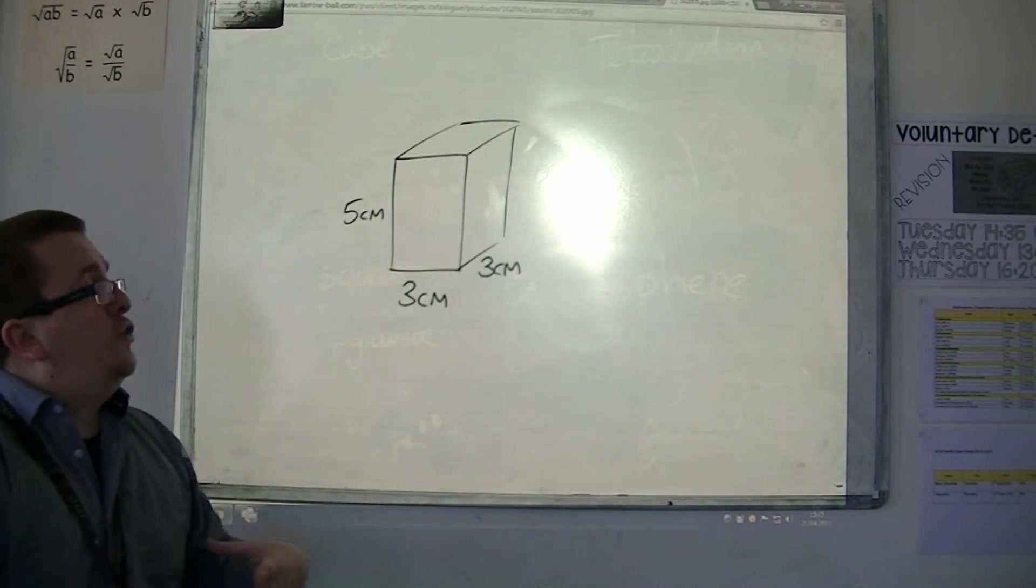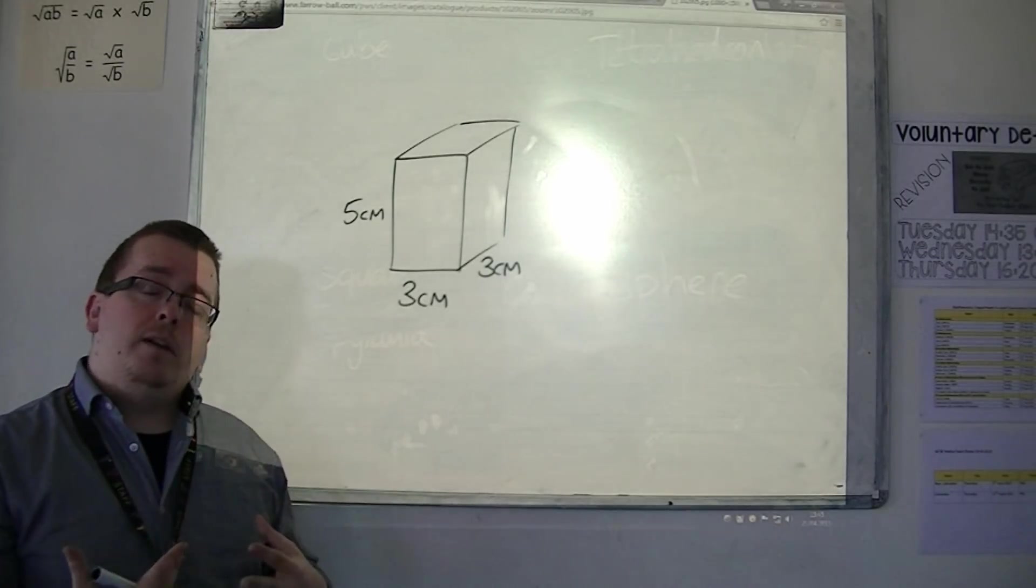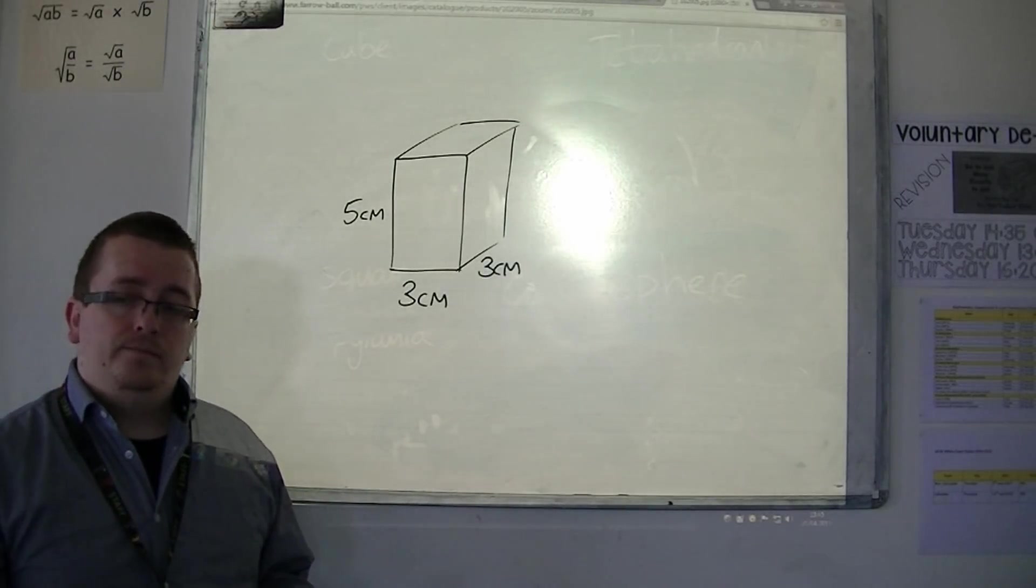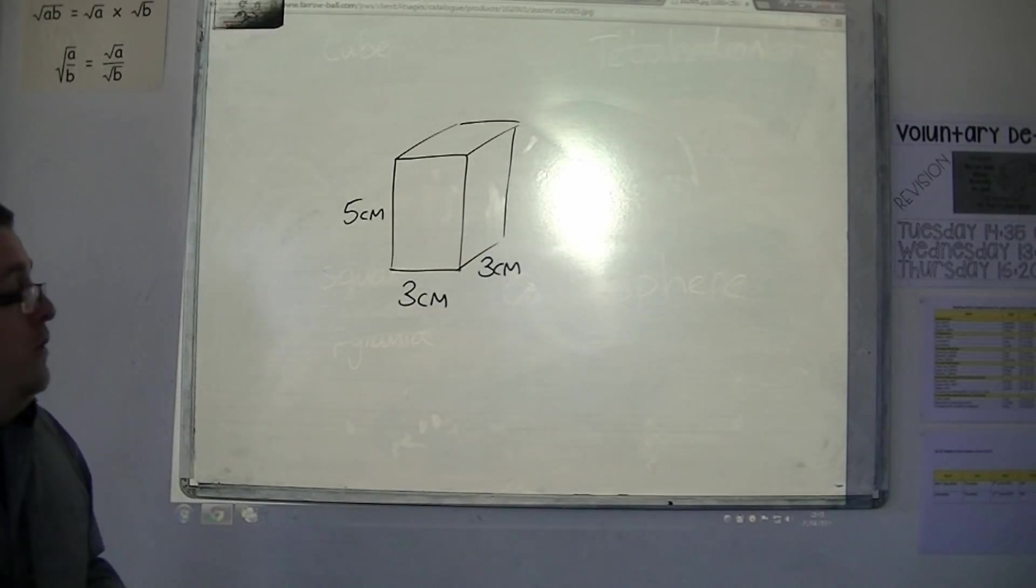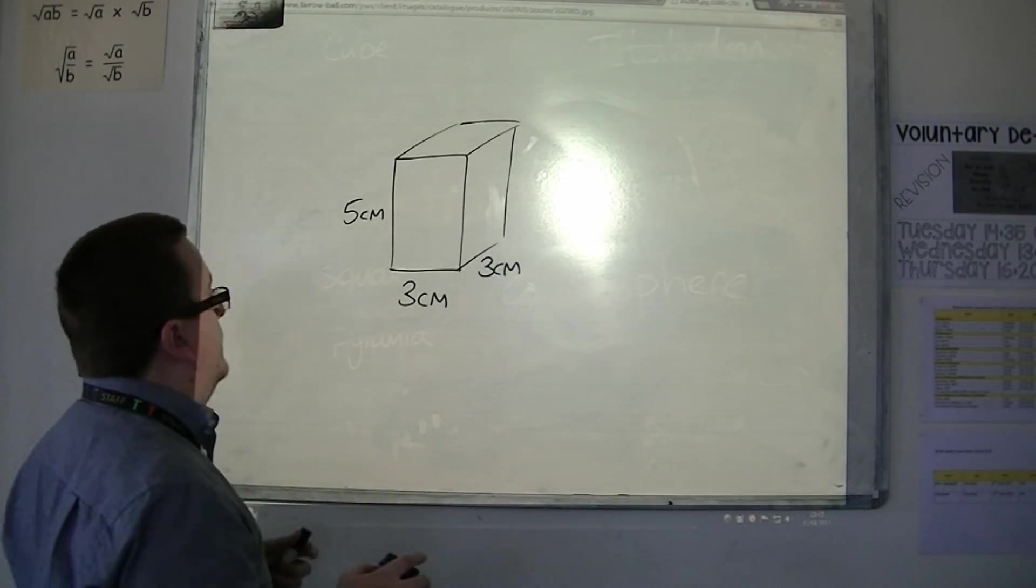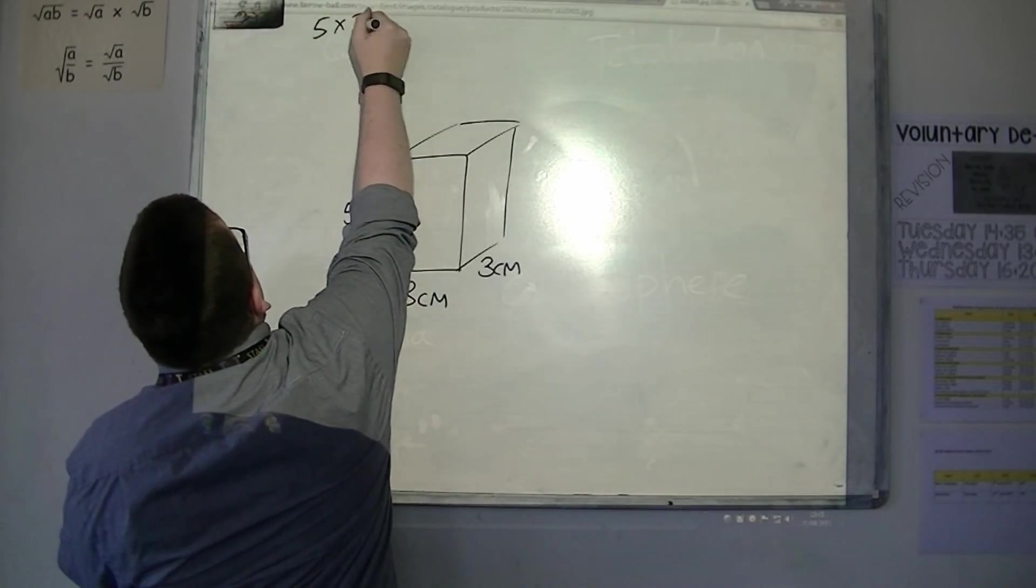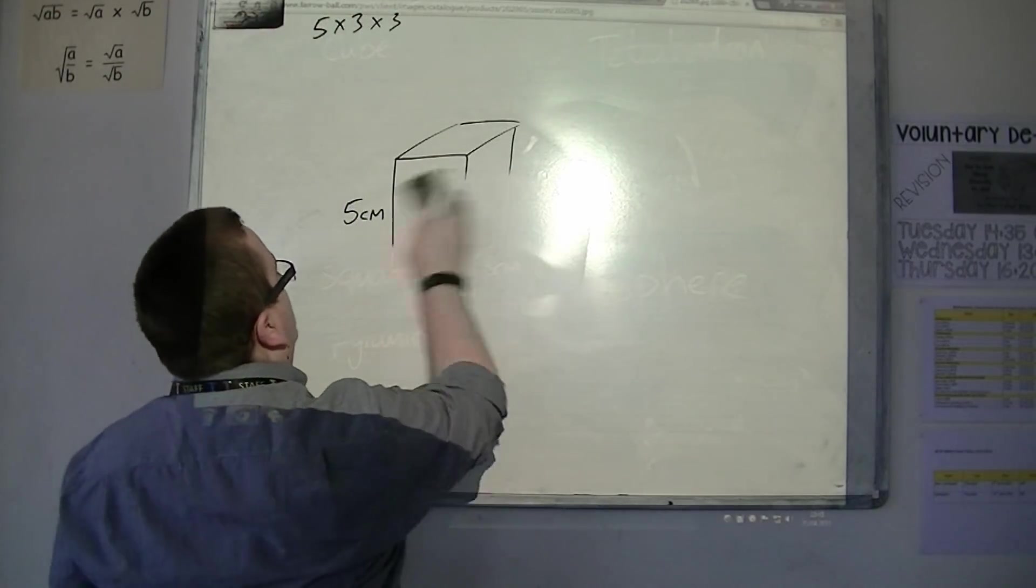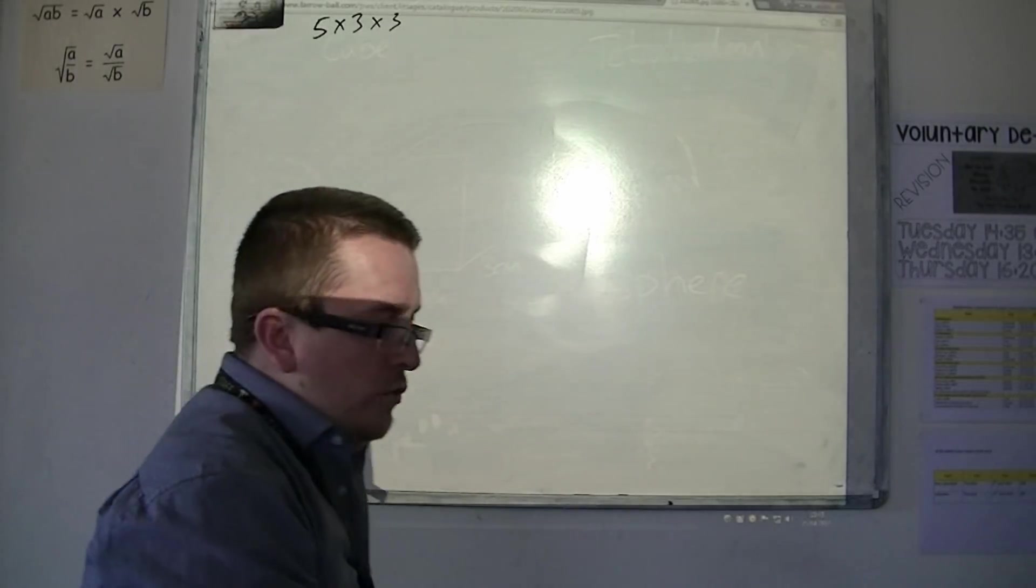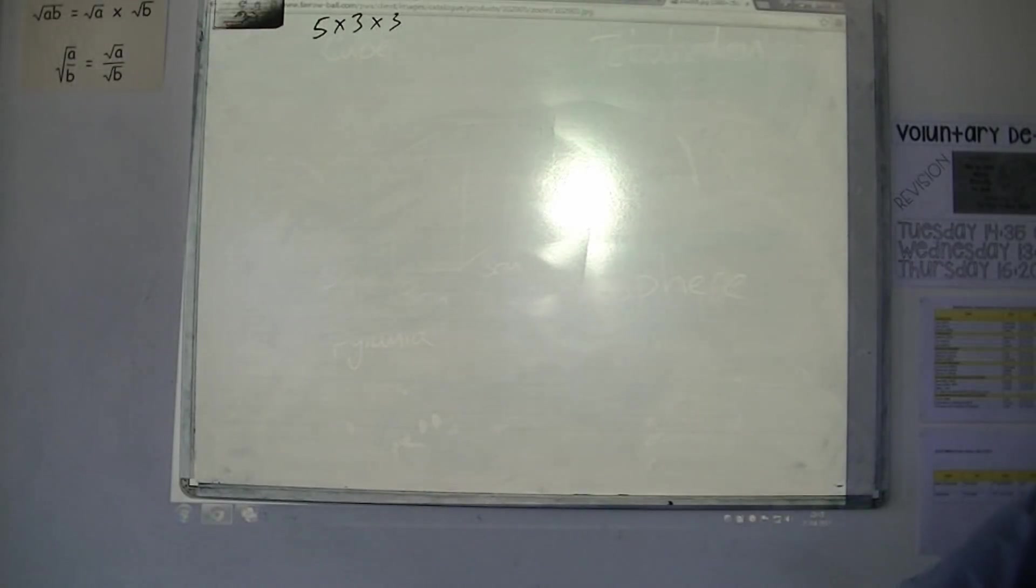Isometric paper allows you to draw a shape like this to scale. And it's done with dotty paper. I'll just take note of the fact that I'm doing a 5 by 3 by 3. I'm going to try and draw this on isometric paper.